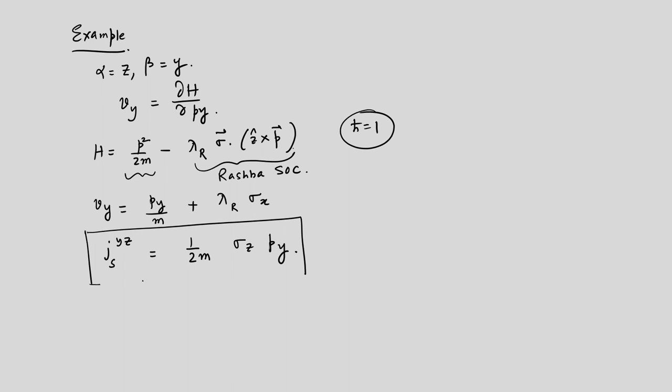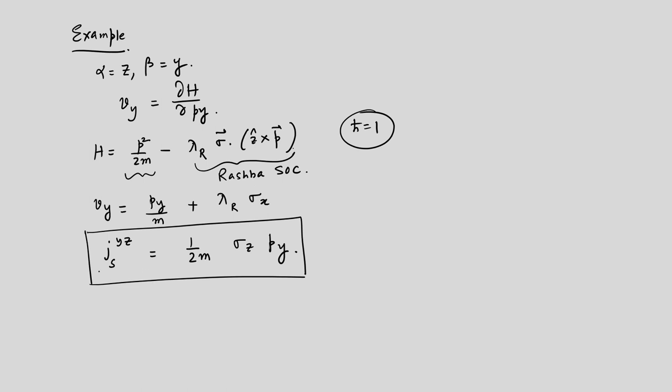Suppose you want to put this into the Kubo formula in order to calculate the Hall conductance or the longitudinal conductance. These expectation values of J_x, J_y, etc., have to be taken between the eigenstates of the Hamiltonian. Once you solve the Hamiltonian and get the eigenstates, one can calculate the Hall conductivity or longitudinal conductivity using the Kubo formula.